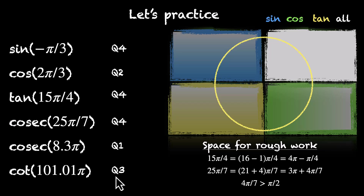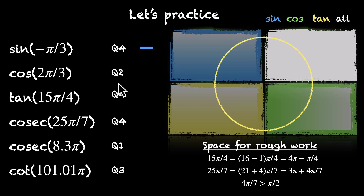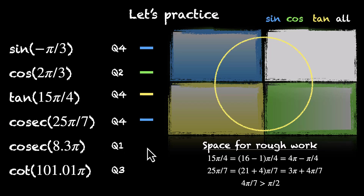Now we have the quadrants and we know the signs of these ratios. Let's wrap this up. Sine in quadrant 4 — that's negative. Cos in quadrant 2 — that's negative. Tan in quadrant 4 — that's also negative. Cos in quadrant 4 — also negative. Cos in quadrant 1 — anything in quadrant 1 is positive, so this is positive. Tan and cot in quadrant 3 are positive — so this is also positive. This is how we figure out the signs of trigonometric ratios using these quadrants.